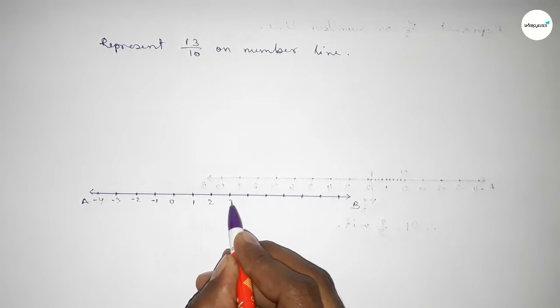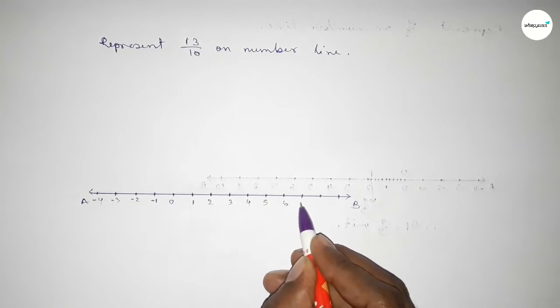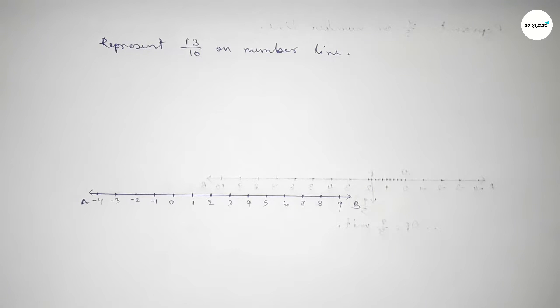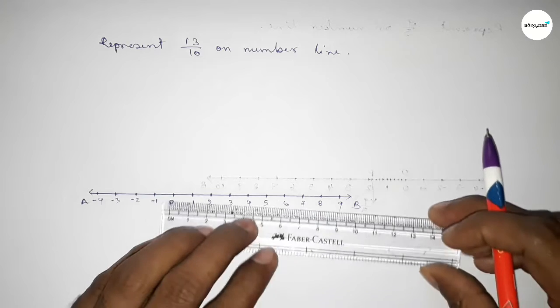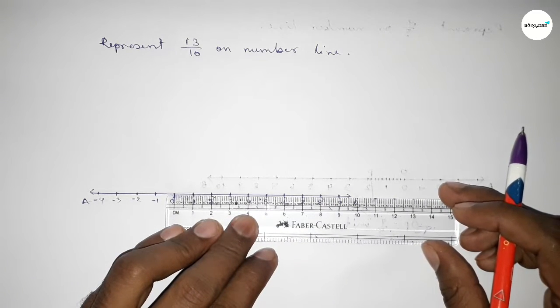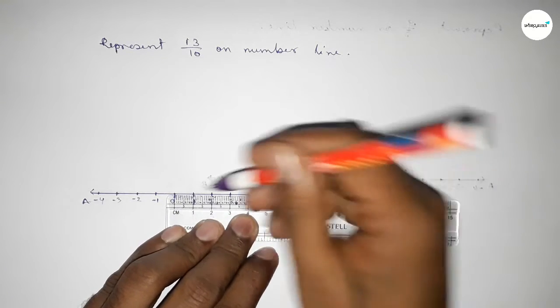Now we have to divide the distance between any two numbers into 10 equal parts, then the length of each part equals 0.1 unit. Between 0 to 1: this is 0.1, 0.2, 0.3, 0.4.